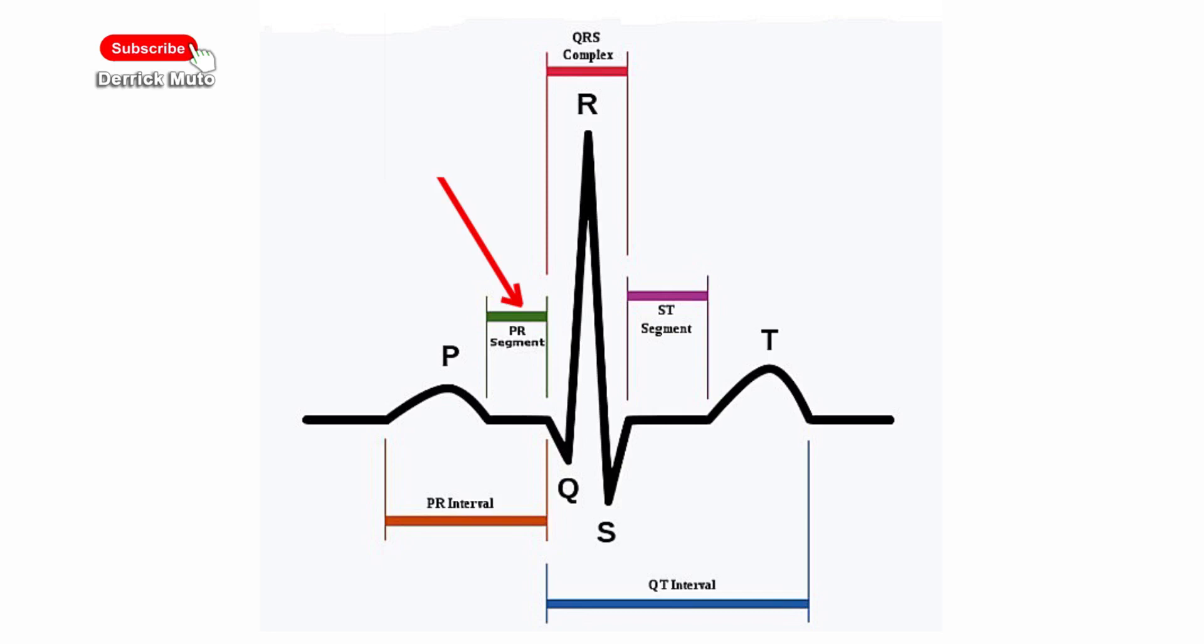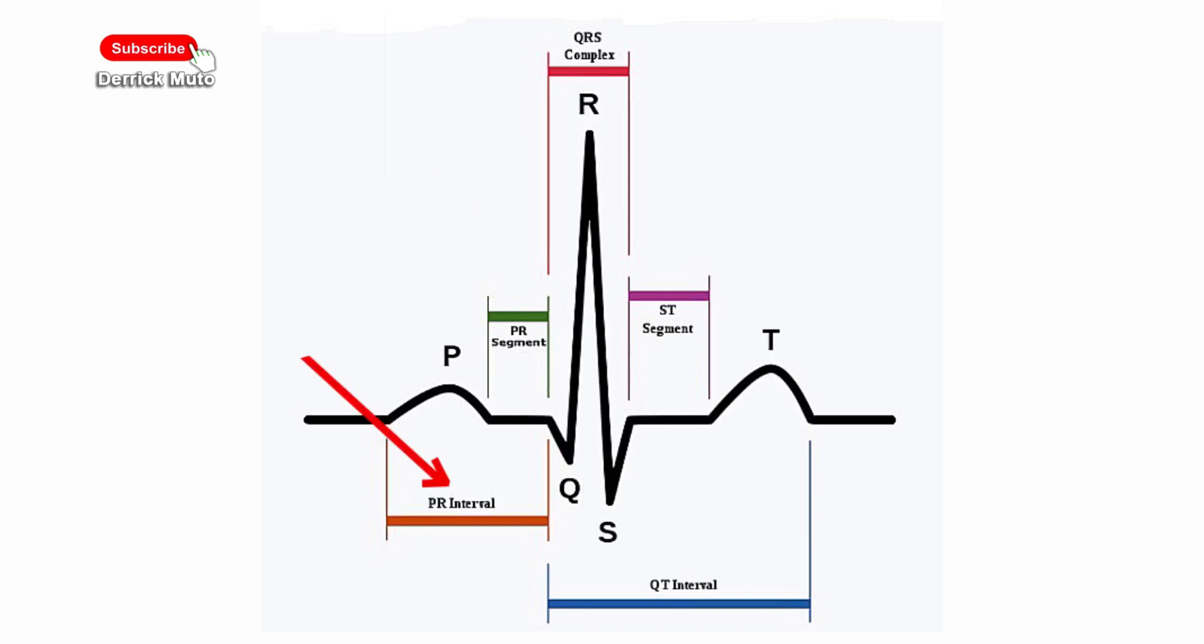This PR segment should not be confused with the PR interval that is measured in time. This is measured in units of time. A normal PR interval measures 0.12 to 0.20 seconds or 120 to 200 milliseconds. A prolonged or shortened PR interval can indicate a certain disease.